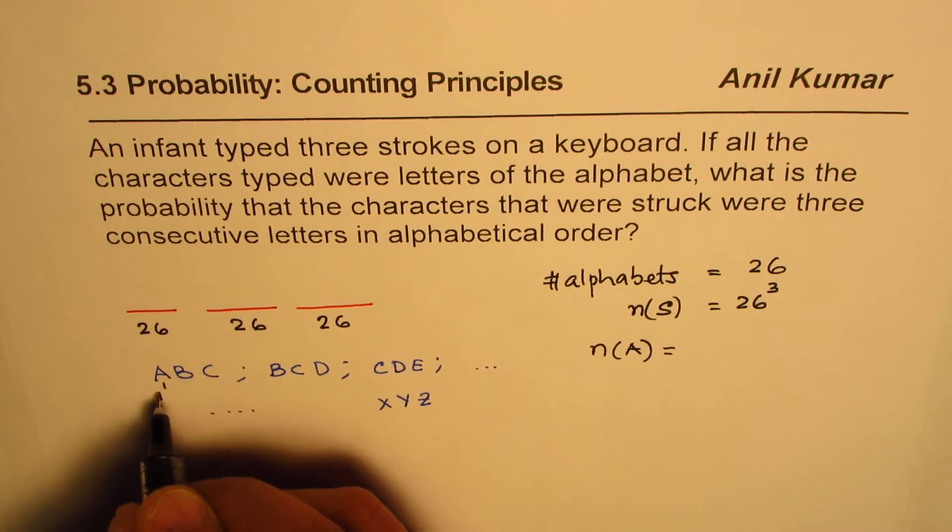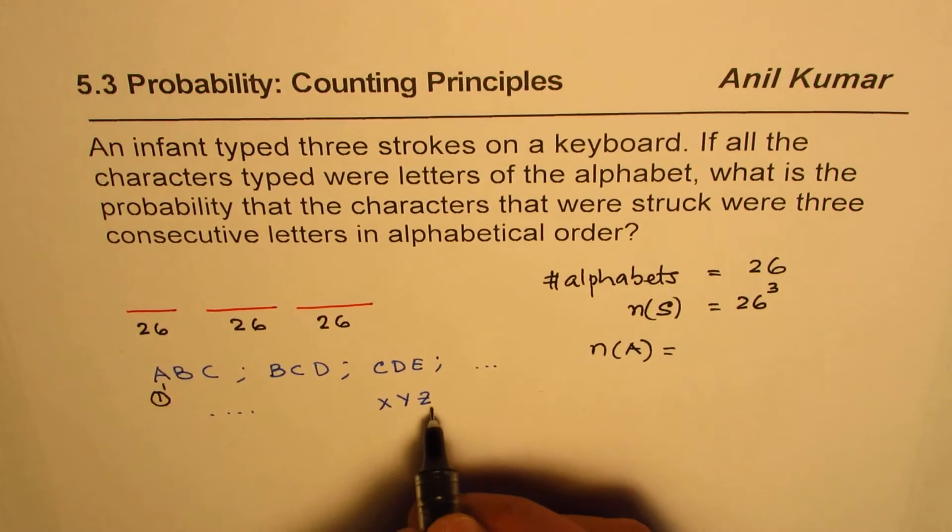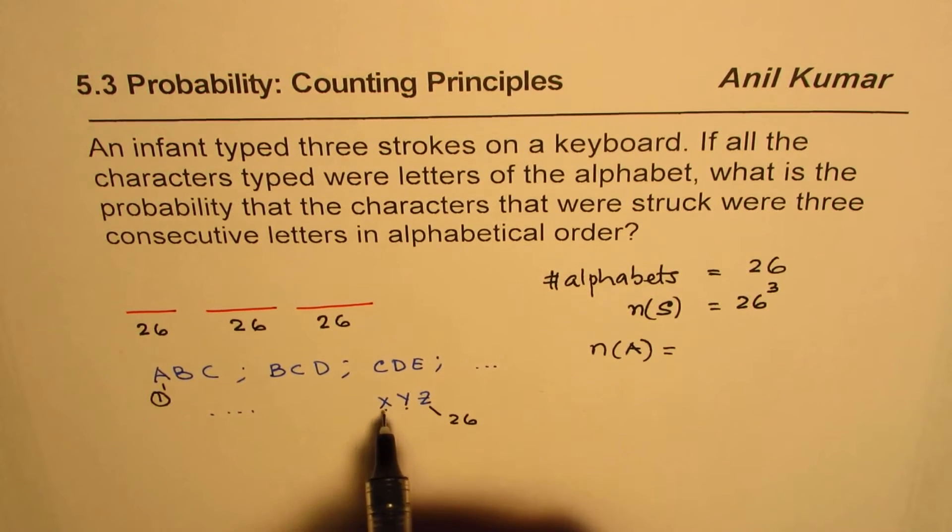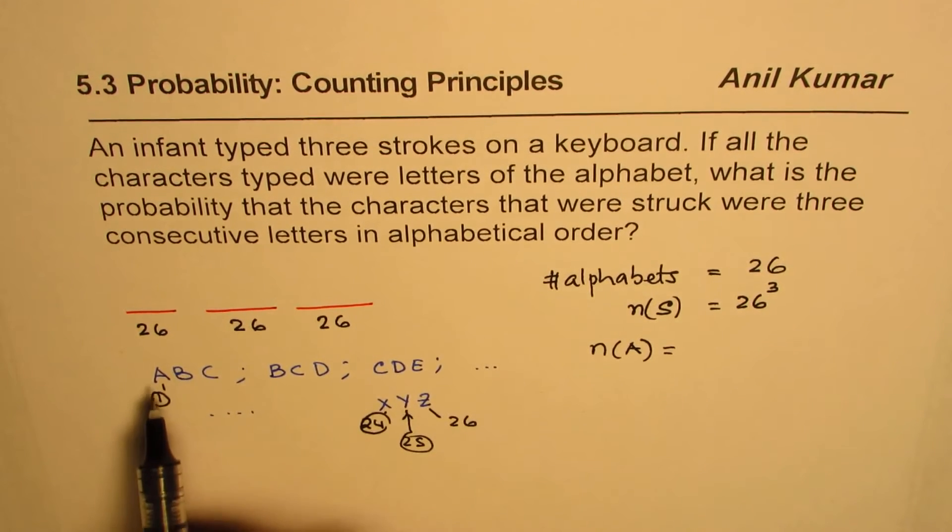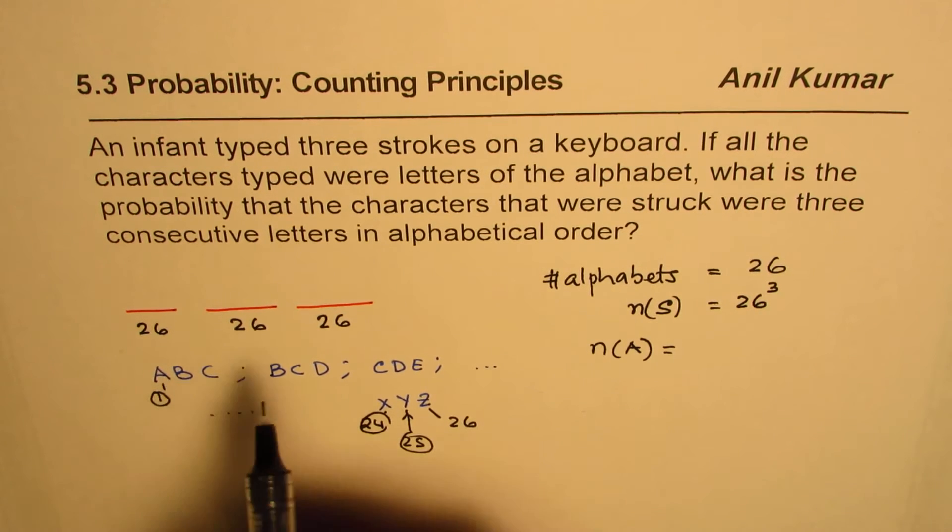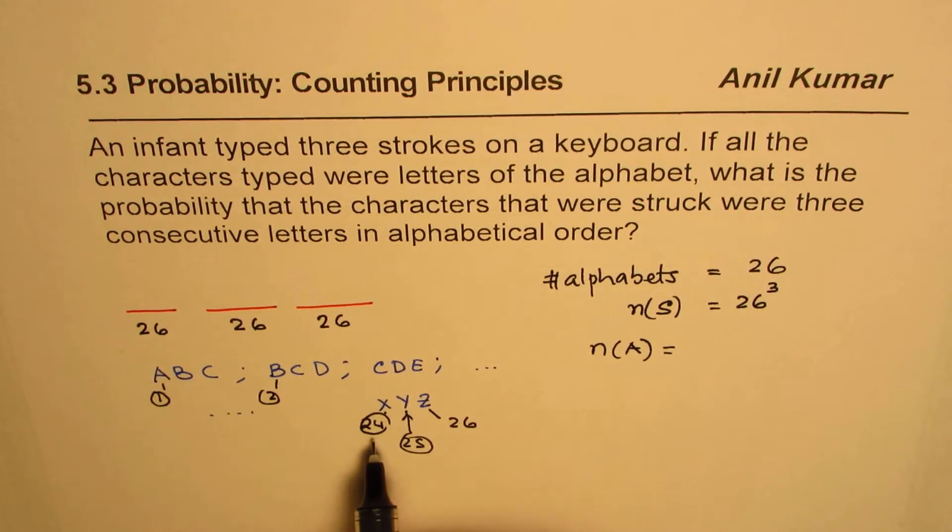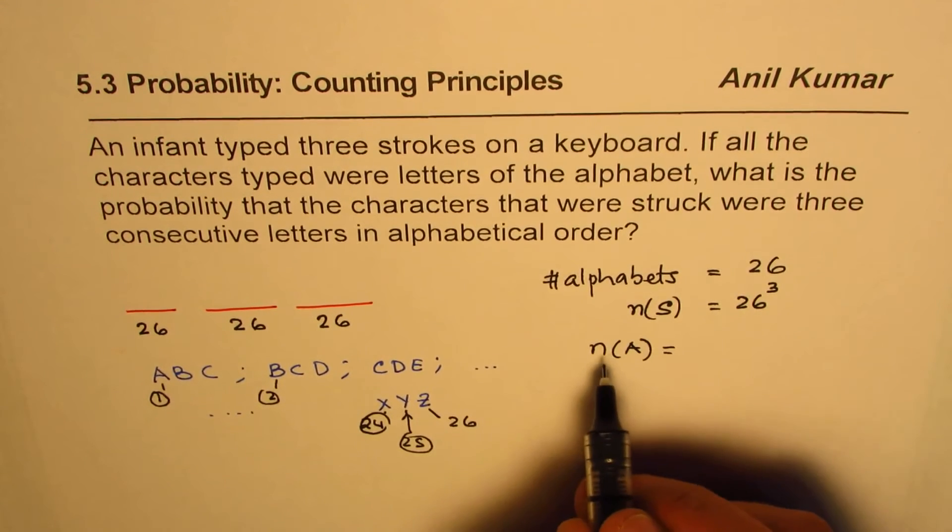Now since we have 26 characters in all, we can start with character 1 and end with character 26. So the position of this will be 24th, correct? This is 25th. Now, starting with 1, we have one set of consecutive numbers. This is the second set, starting with B. So in all, we have 24 combinations. XYZ will be 24.